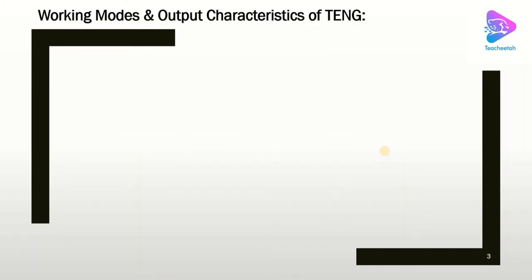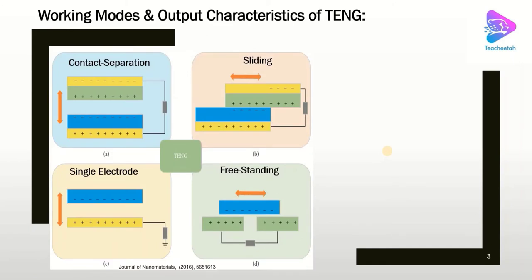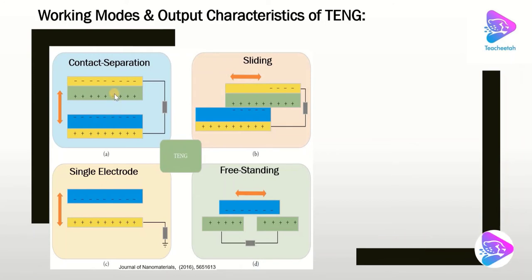Let's see the working modes and output characteristics of the TNG. TNG can work in four different modes. The first is the contact and separation mode, based on contact of two dissimilar materials and then separation to generate a signal. The second mode is sliding, where sliding of two different materials causes charge generation and electricity generation. The third is the single electrode mode, where one material is connected to a reference electrode. And finally, the free-standing mode, where a material moves freely between two electrodes.